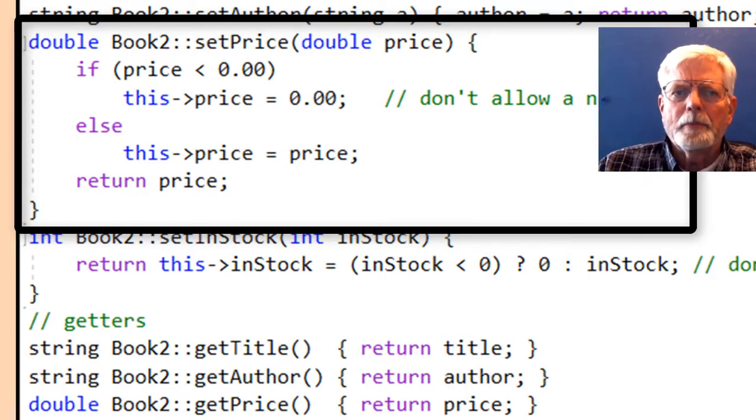The code in the setPrice checks to see if the value received is less than 0.0. If it is, then the price member variable is set to 0.00. Else, the price member variable is set to the value that was passed to the setPrice member method by main. The return statement sends back the value that was actually stored in the price member variable.